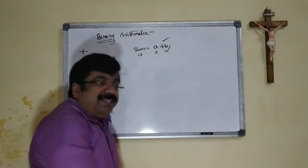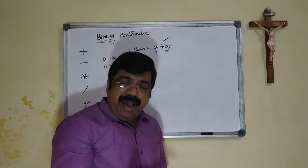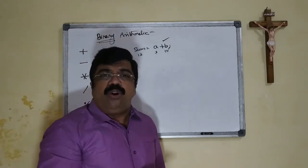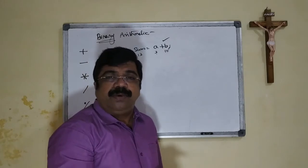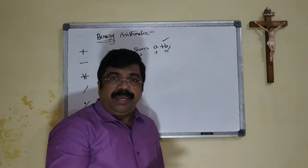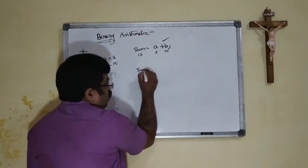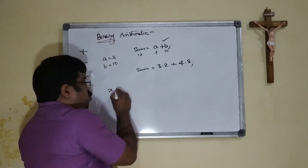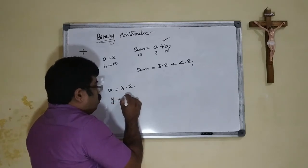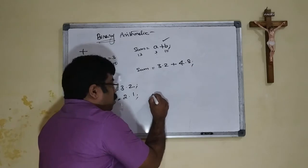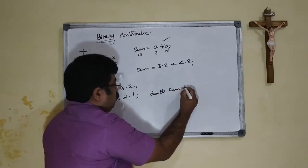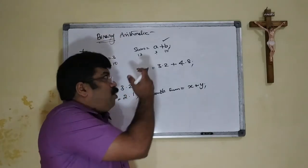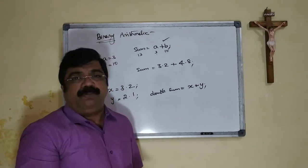This binary arithmetic plus operator can operate with byte, short, int, long, character, and float. It can work with almost all primitive data types except void. For example, if we give sum equal to 3.2 plus 4.8, it can be done. Or using x equal to 3.2 and y equal to 2.1, we can write double sum equal to x plus y. It can add fractional values as well. That is about the binary arithmetic plus operator.